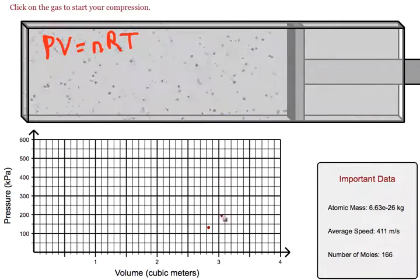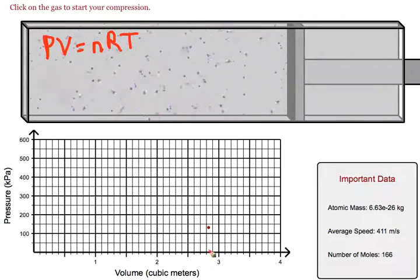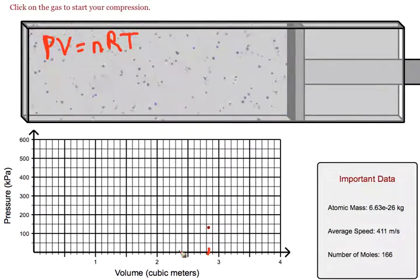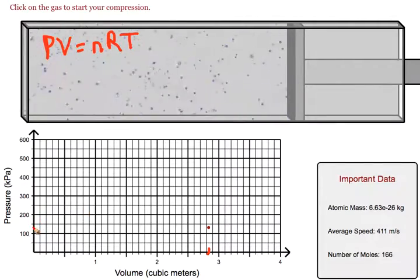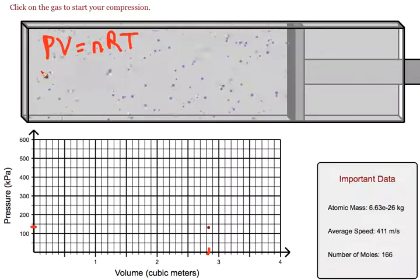We get the pressure and volume from our graph. So our volume is about 2.83. Our pressure is probably about 140 kilopascals.